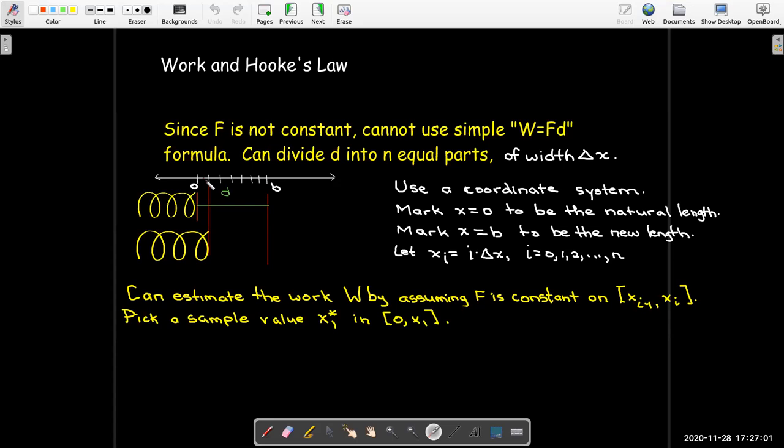So, for example, if I only want to stretch the spring a tiny distance delta x, I can pick some point between 0 and x sub 1. And I'll call that point my sample point, special point x sub 1 star.